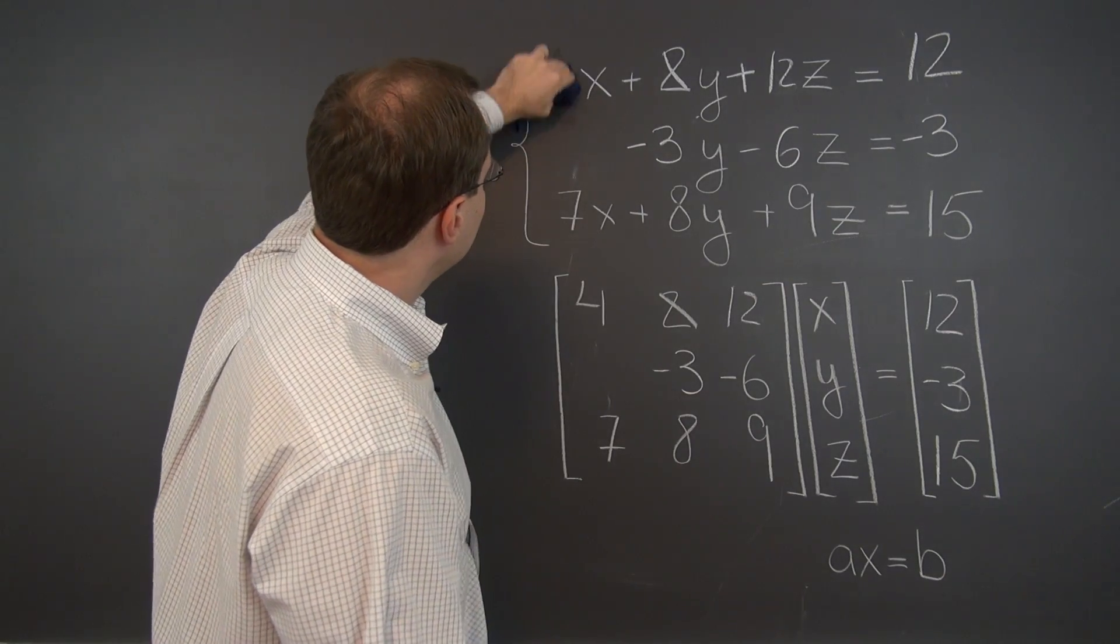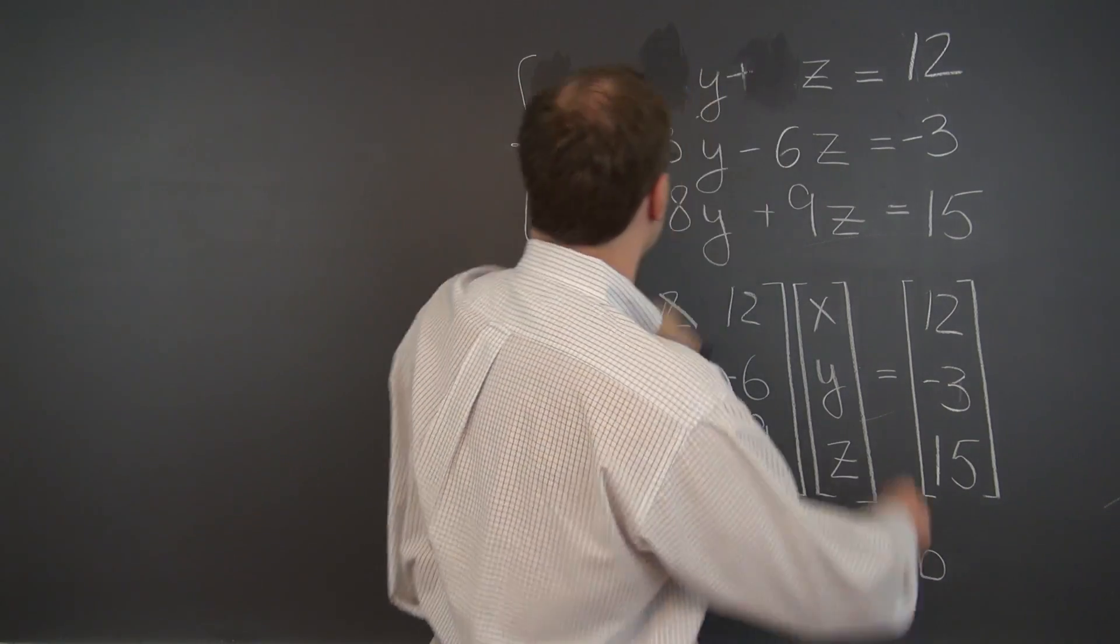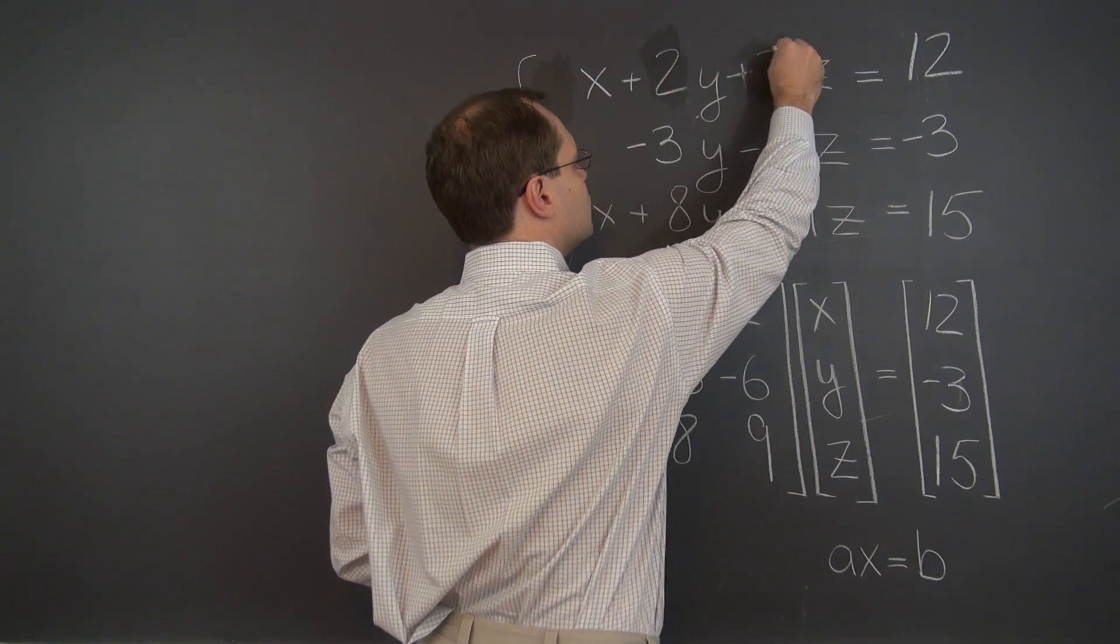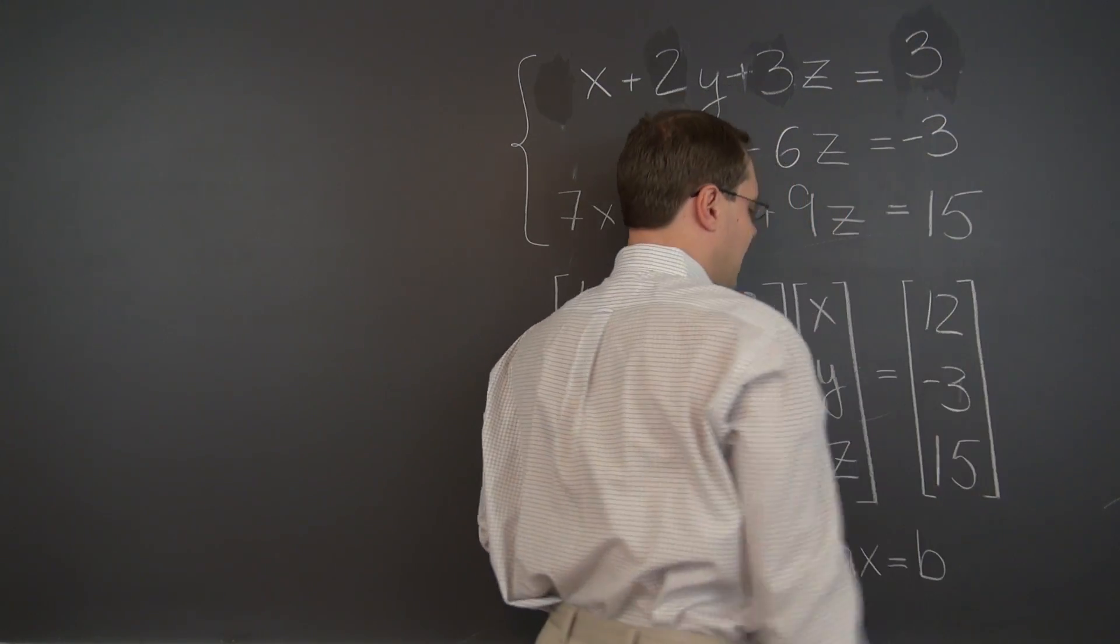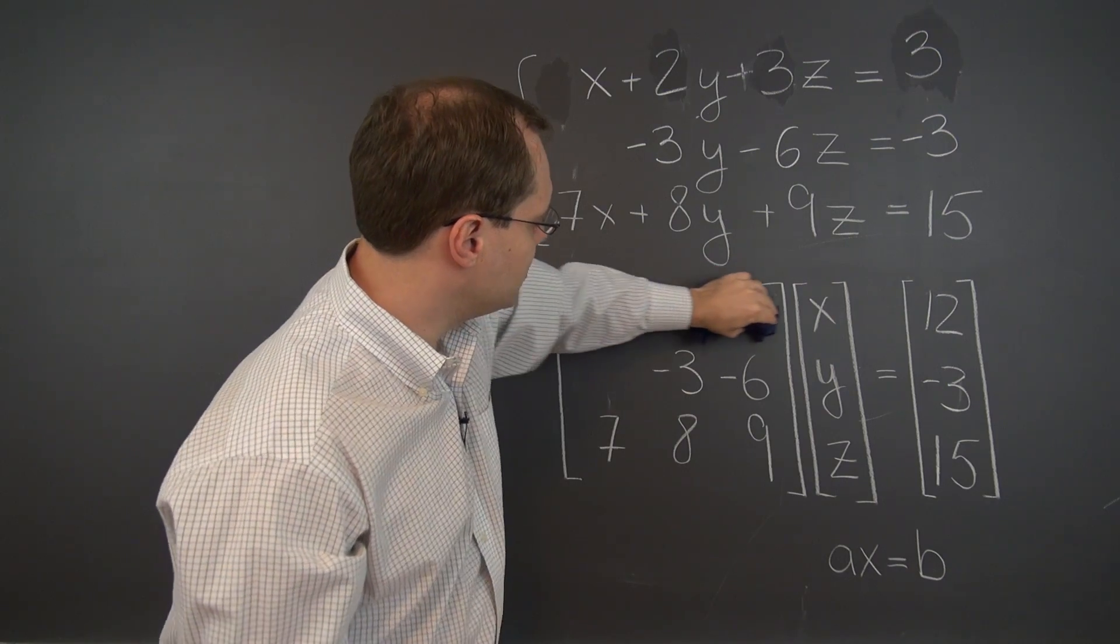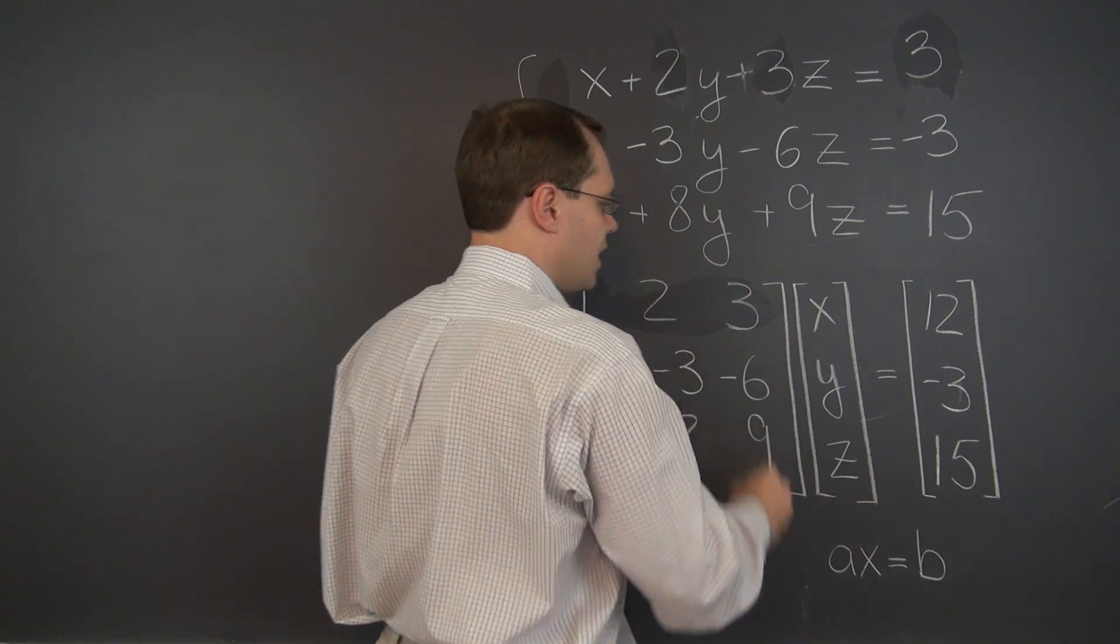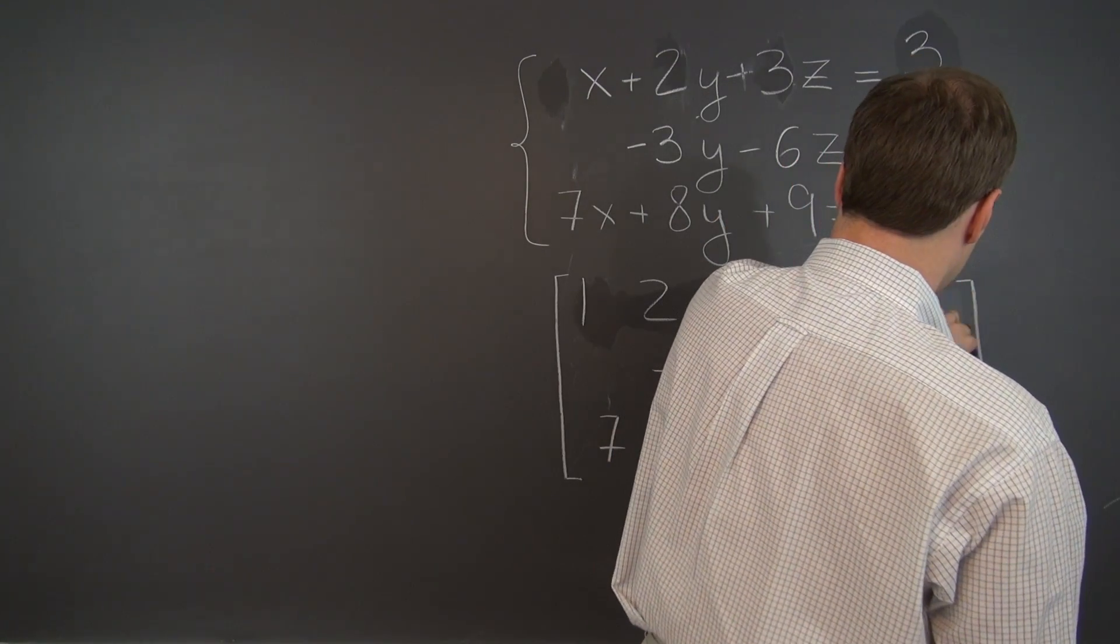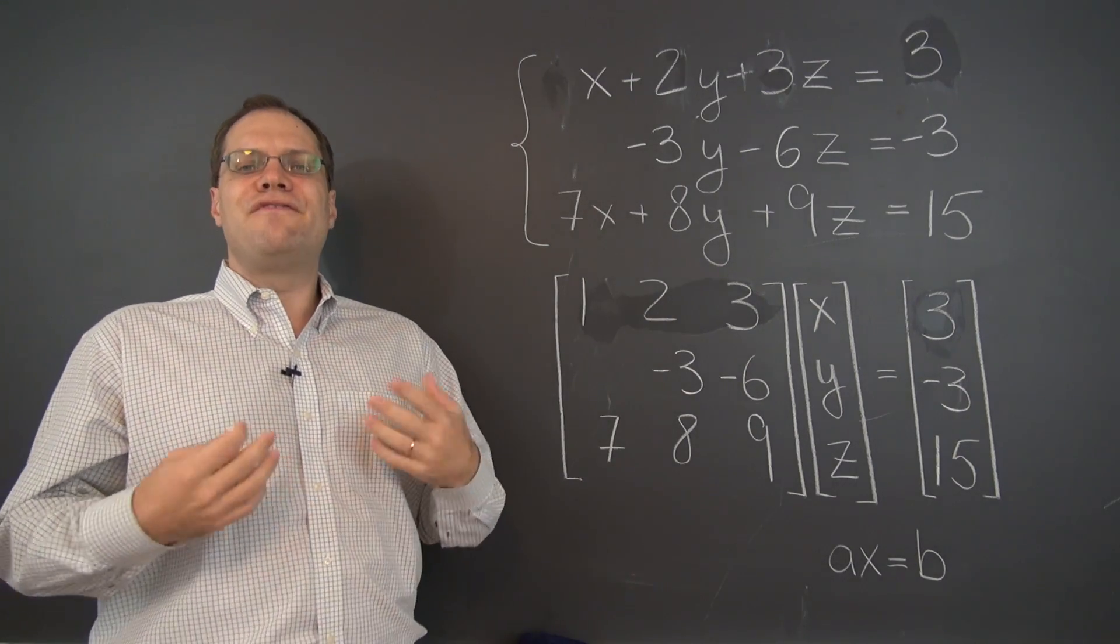So going back, this becomes a 1. This becomes a 2 and this will be a 3. 1, 2, 3 equals 3. And let's affect the same change here. So 1, 2 and 3 in the first row. And a 3 on the right hand side. And now let's think about what we did effectively.